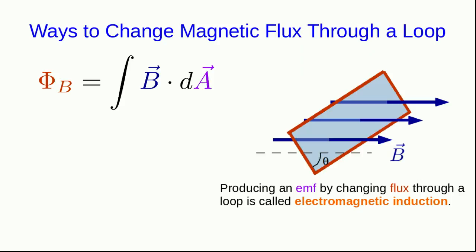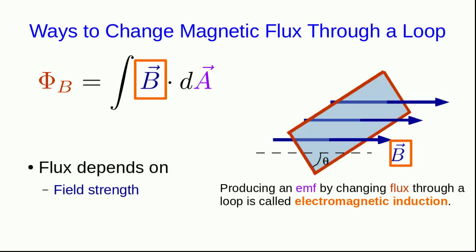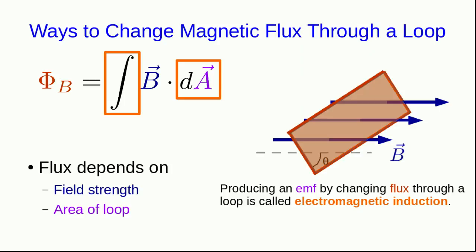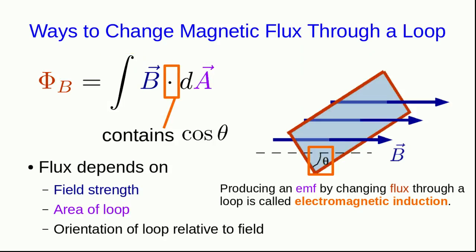We've mostly focused on doing this by changing the B-field strength, which is one thing that the flux depends on. But there are other ways to change the flux: if you have a flexible loop or some other way of changing its area, that will also allow you to change the flux through it. And that dot product involves the angle between the area vector and the B-field, so changing the orientation of the loop relative to the field will also induce an emf.